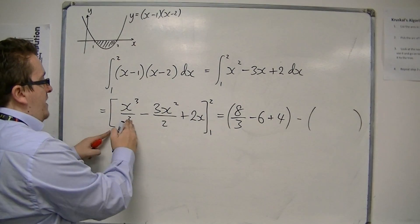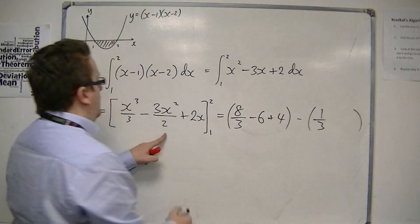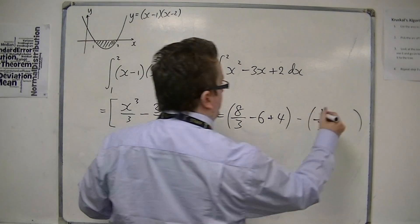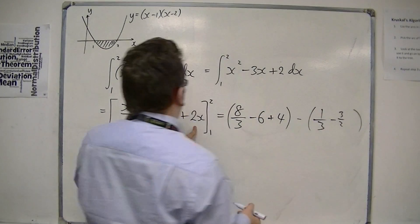Substitute the 1 next, so we get 1 third, take away 3 halves, plus 2.